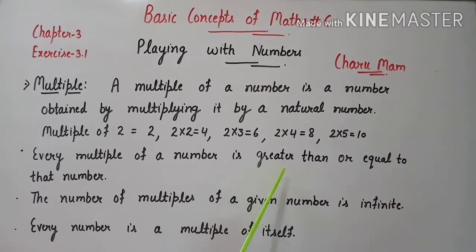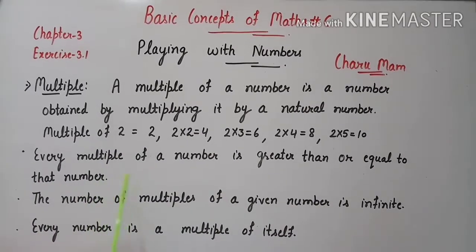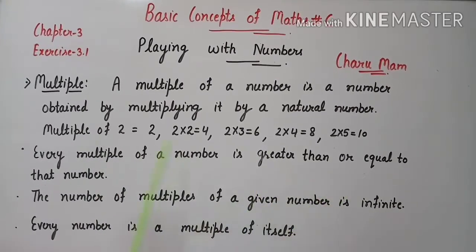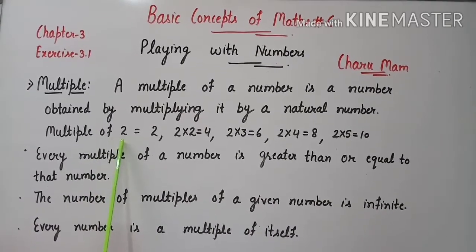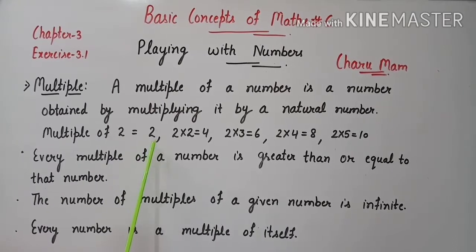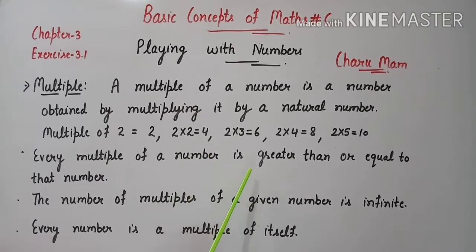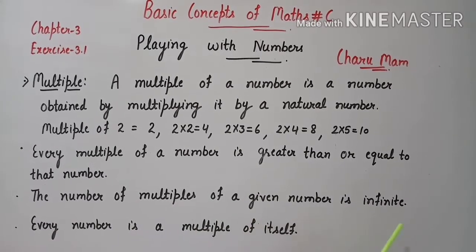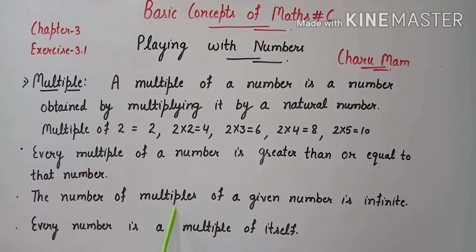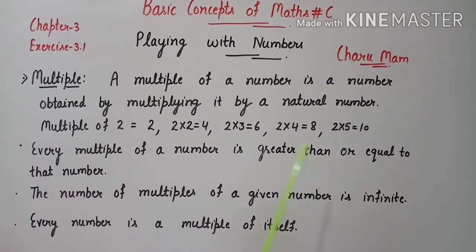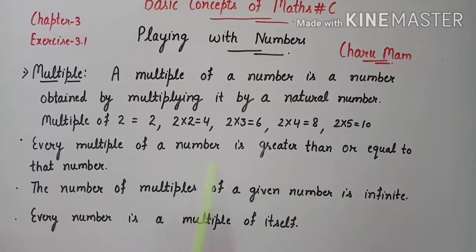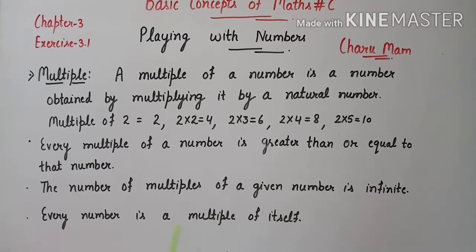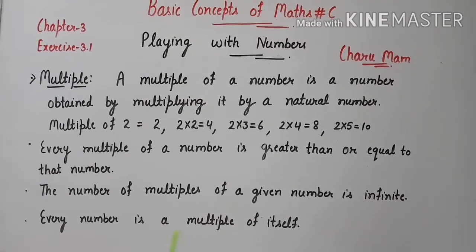Every multiple of a number is greater than or equal to that number. The number of multiples of a given number is infinite, which means if we find out multiples of any number, they will be infinite — we cannot count them. Every number is a multiple of itself, which means if we find out the multiples of any number, that number itself will also be one of its multiples.